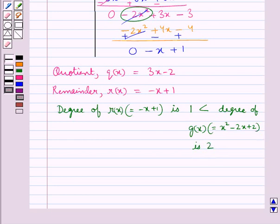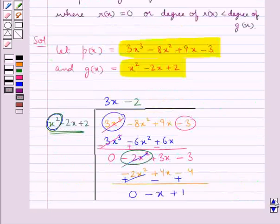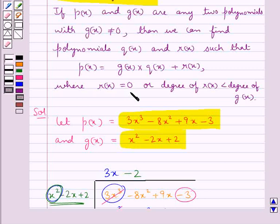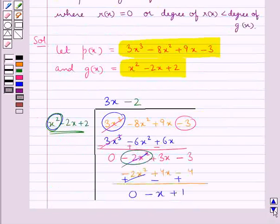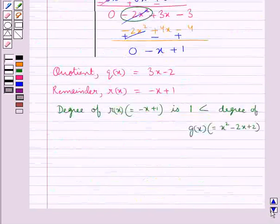This satisfies the condition in the division algorithm: degree of r(x) is less than degree of g(x), or r(x) = 0. Since r(x) is not equal to 0, the condition that degree of r(x) is less than degree of g(x) is satisfied.